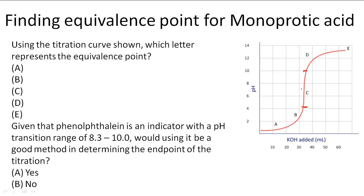So the equivalence point is going to happen in section C. So C best represents the equivalence point because it's at the steepest part of the titration curve.